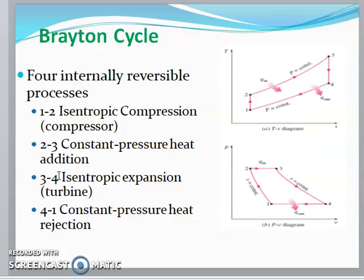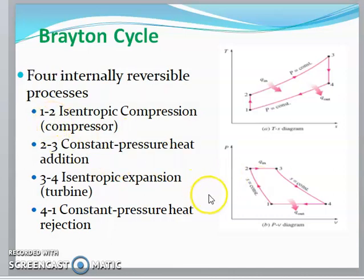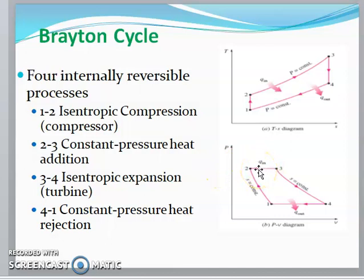Next, in the Brayton cycle we have a T-S diagram and a P-V diagram. It is a gas cycle. The process 1 to 2 is isentropic compression in the compressor. Process 2 to 3 is constant pressure heat addition, where P2 equals P3.